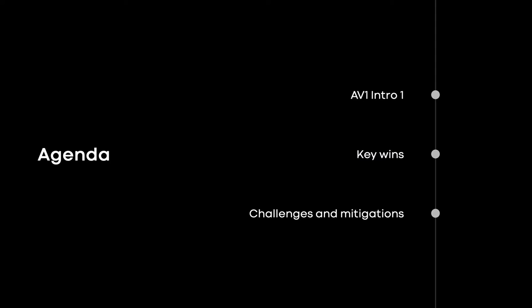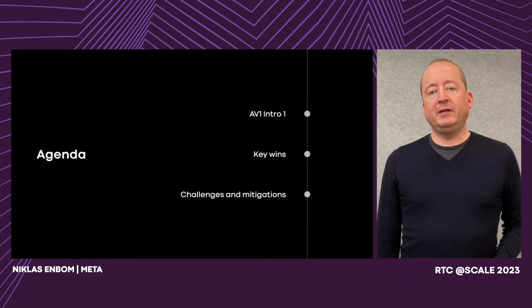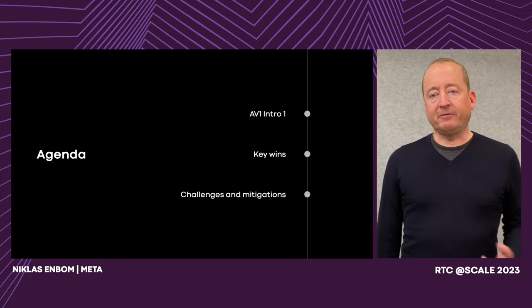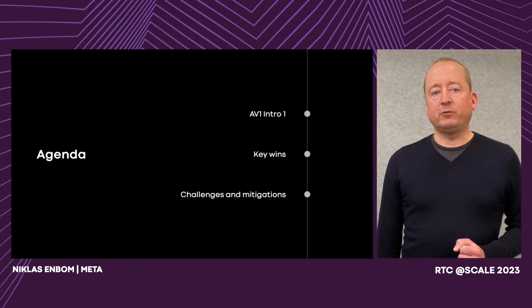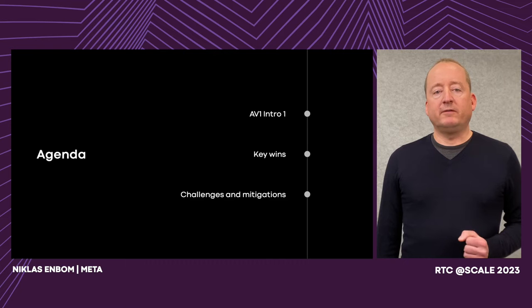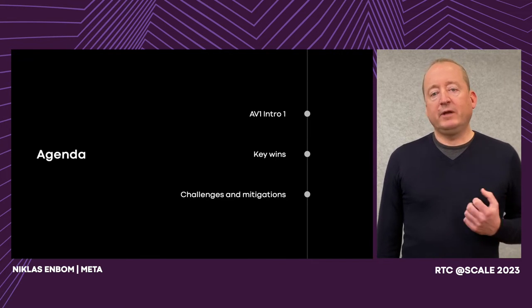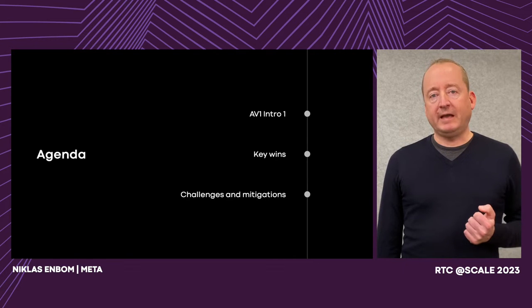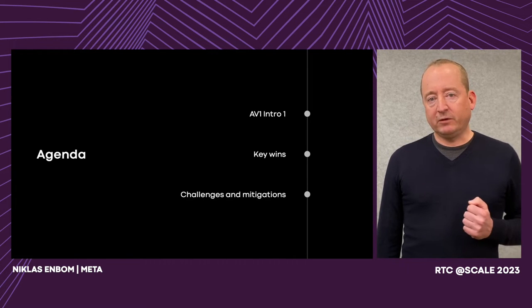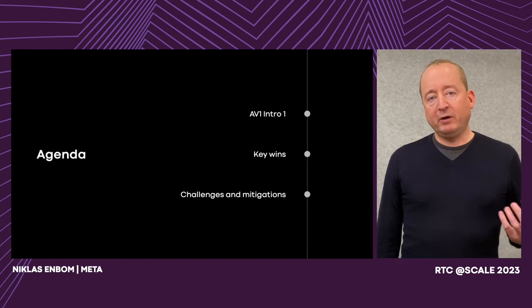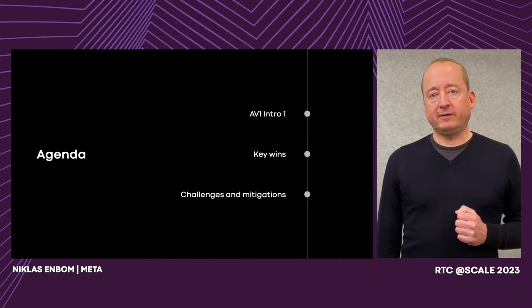My talk today is going to cover our adoption of the AV1 video codec for real-time use cases. You might remember that last year we had two talks from Google and Visual Newner that went deep into the performance and benefits of AV1. If that's something you're interested in, you should definitely go back and listen to those as well. My talk is going to be more focused from a system integrator perspective, focused on doing codec generational shifts at large scale. I hope this is something you'll find beneficial and be able to apply to other similar technology shifts as well.